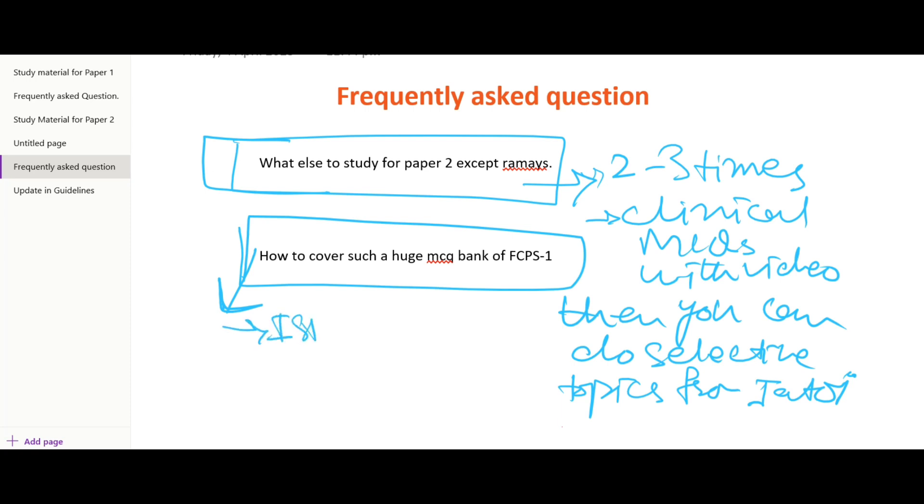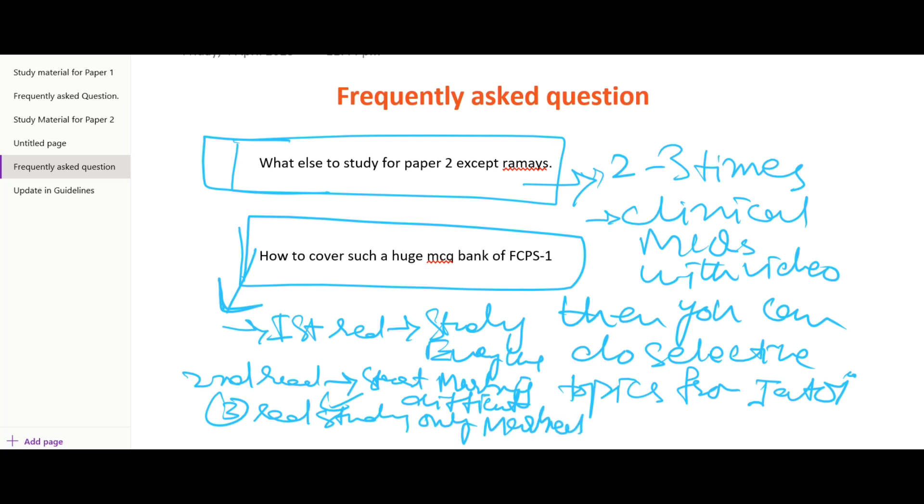So in the first read, study theory plus MCQs. In the second read, study marked MCQs. In the third read, study only marked ones, and in this read then again mark the difficult ones. You should study these at the end, near the exam. In this way, you can narrow down your course.